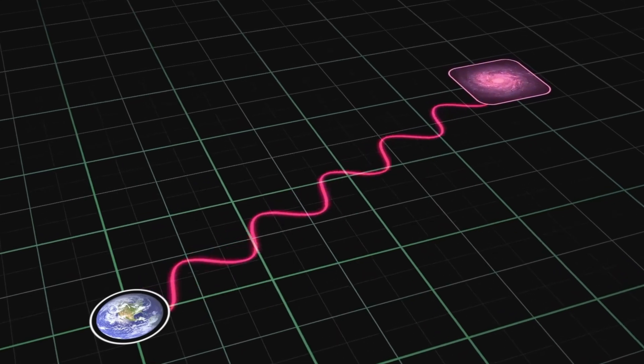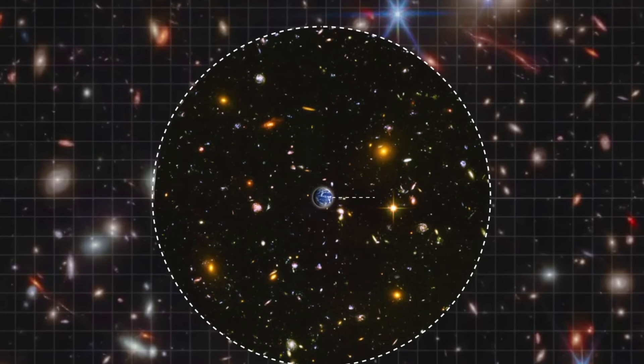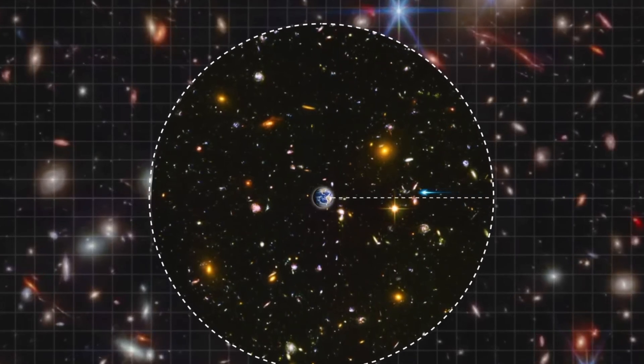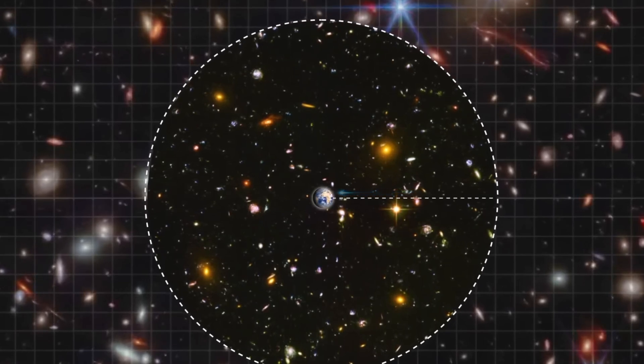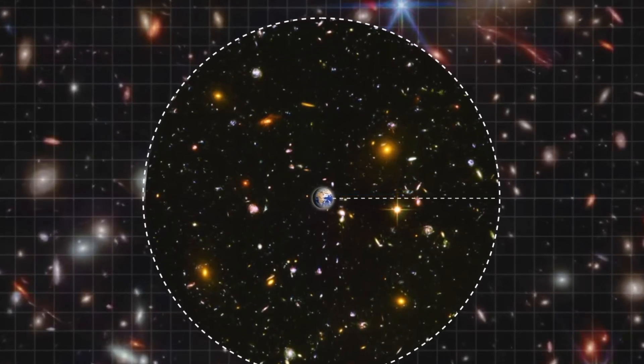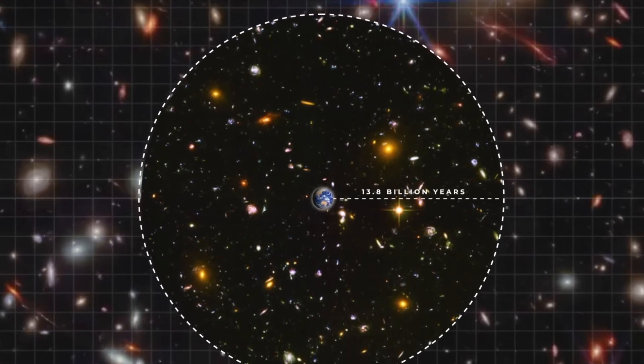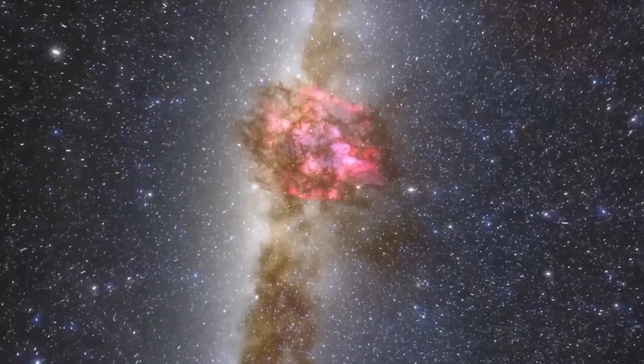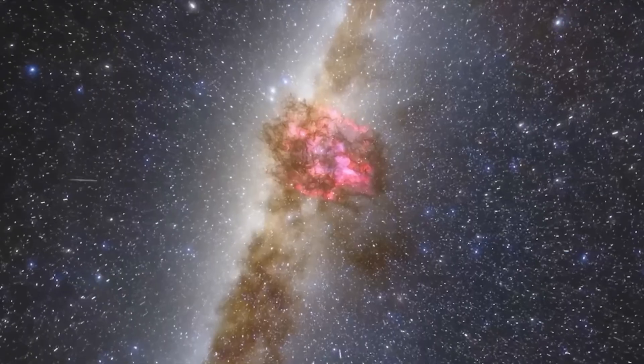However, for this to significantly decrease our ability to detect them, they would need to be far enough away that the light from their location would take a substantial fraction of the universe's age to reach us. This is because even when observing distant galaxies millions of light years away, they still would have had billions of years for intelligent life to evolve, making the probability of detecting evidence of it very high if it exists, regardless of whether we see these areas as they were millions of years ago.